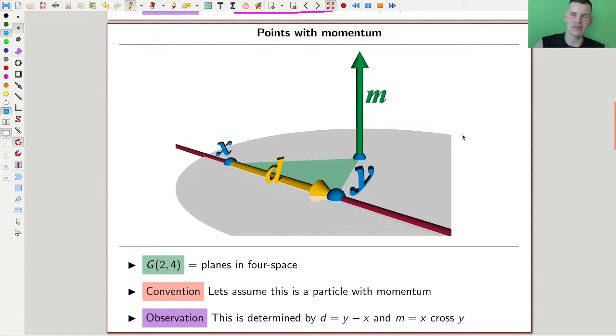And the historically motivating example is a point with a momentum, which we'll see later is kind of the Grassmannian 2, 4, so planes in 4 space, whatever. But let's just have a look at the point with a momentum, a particle with a momentum.